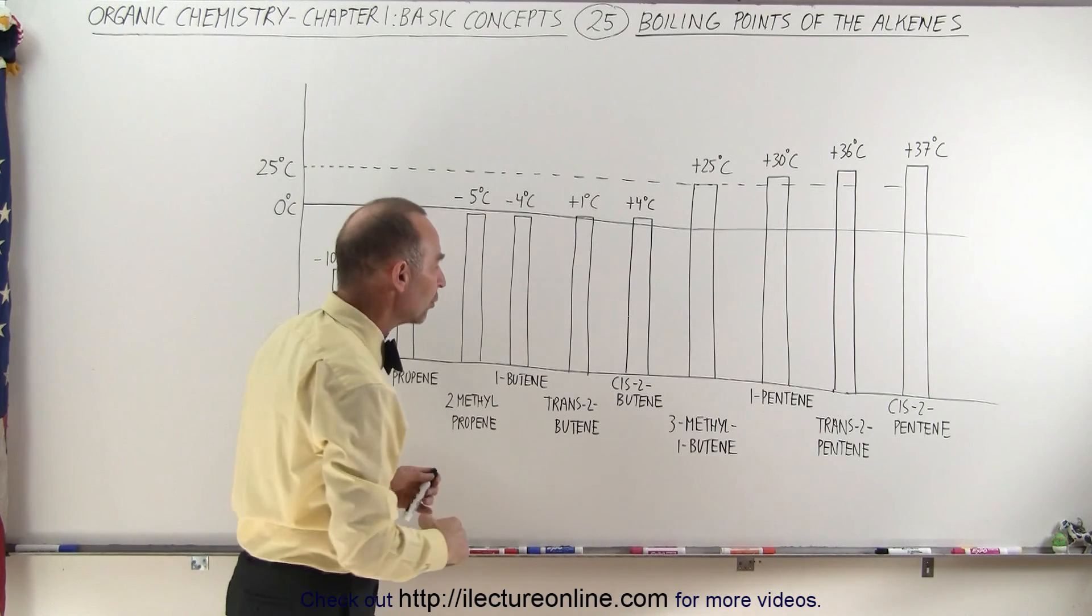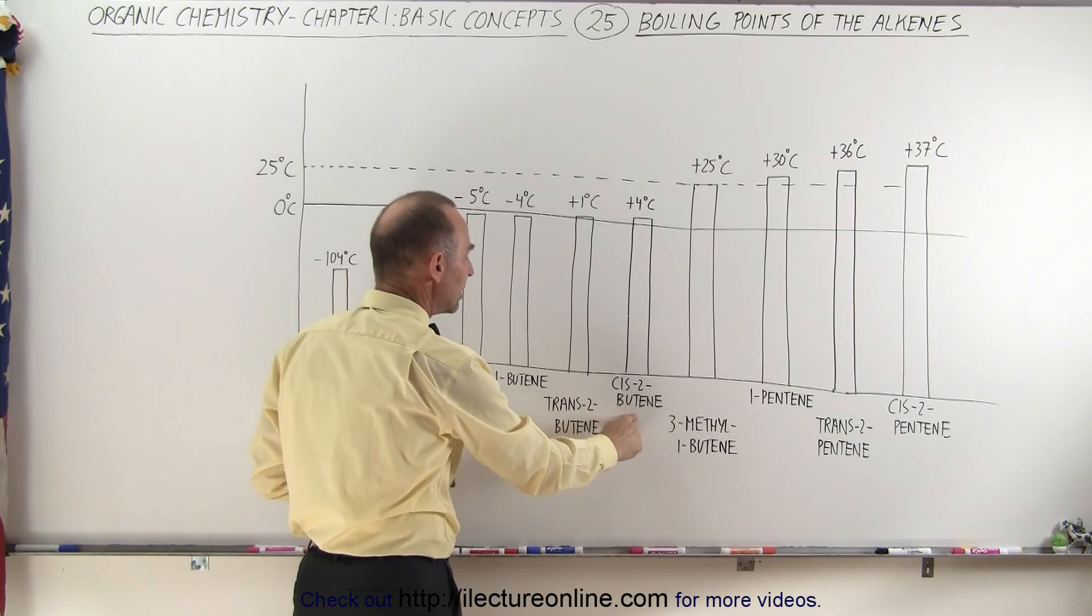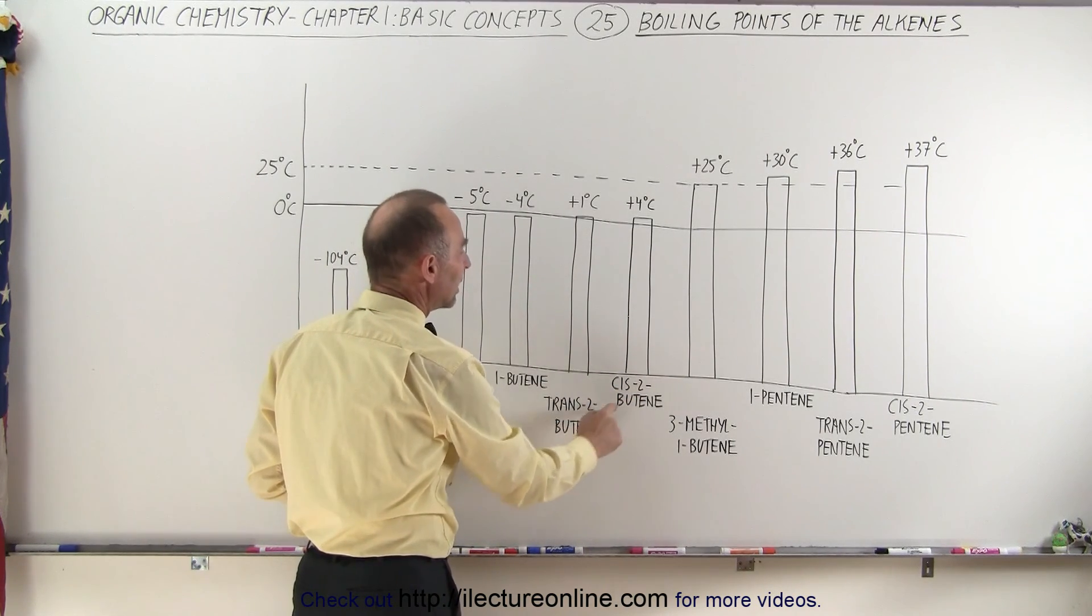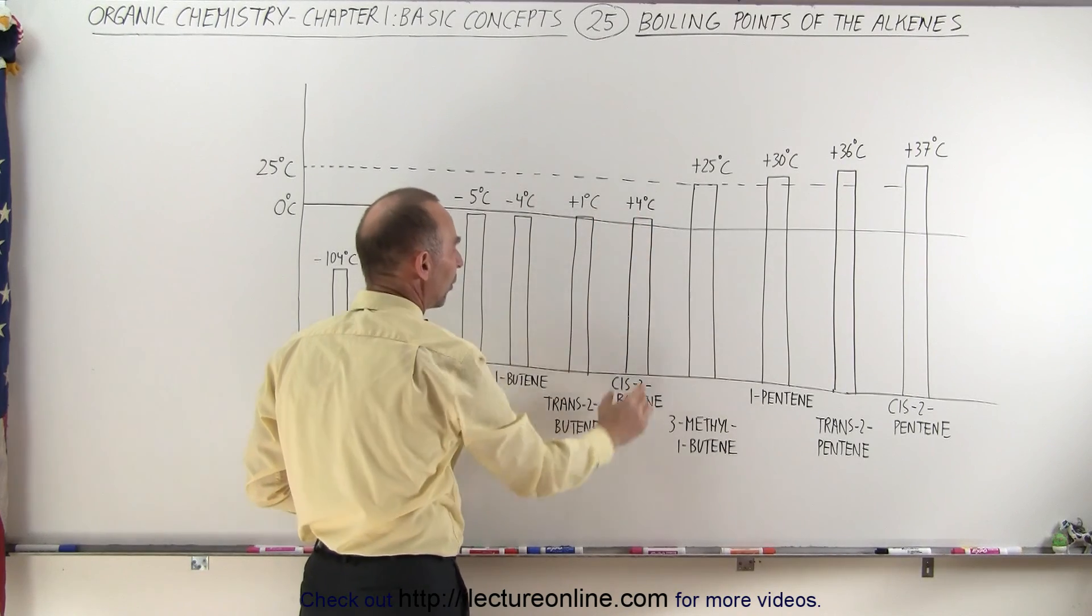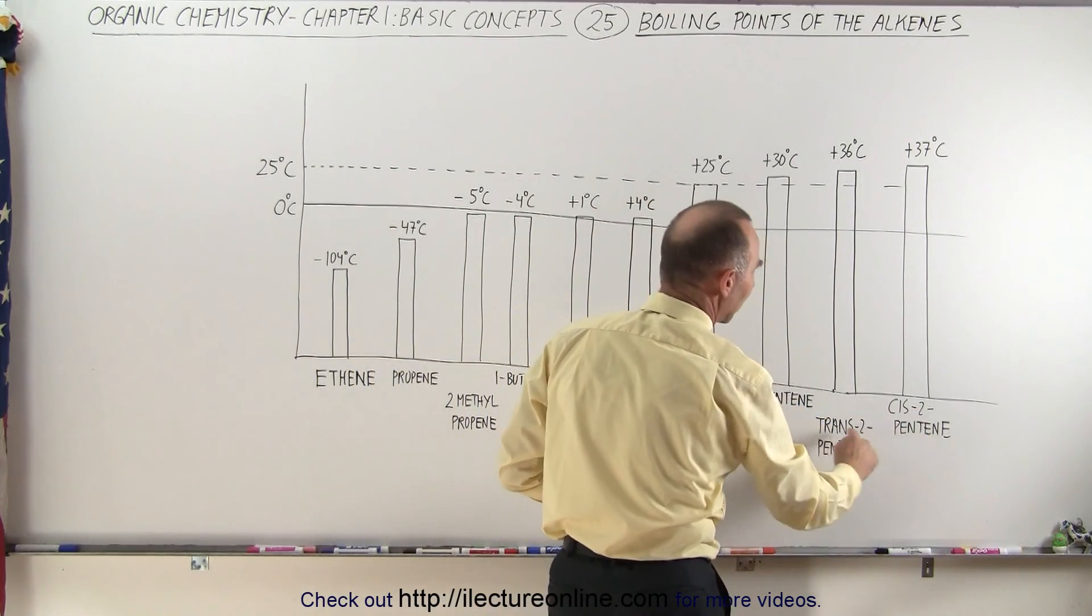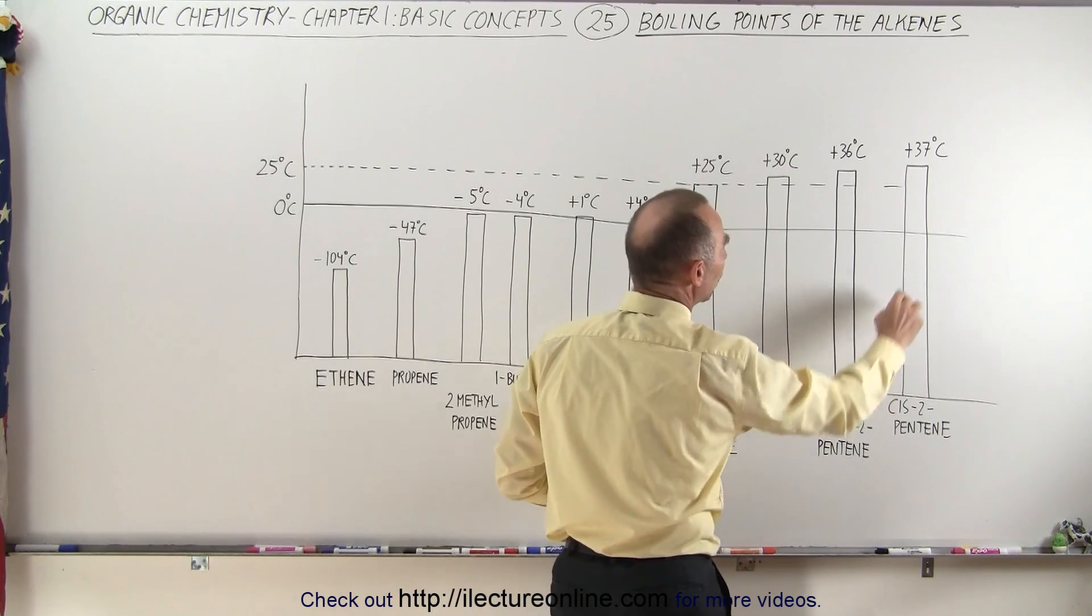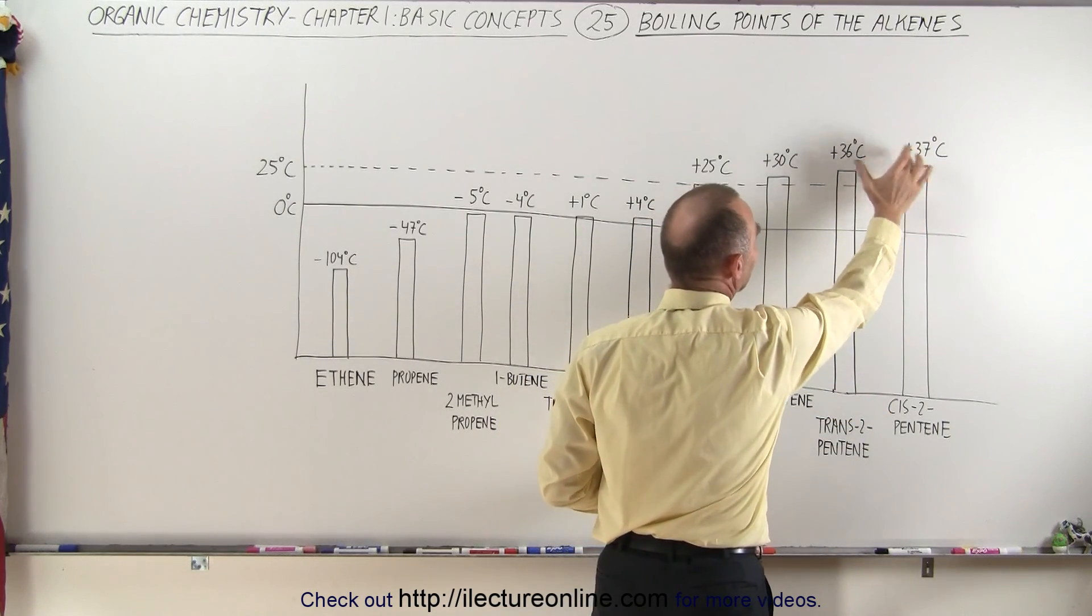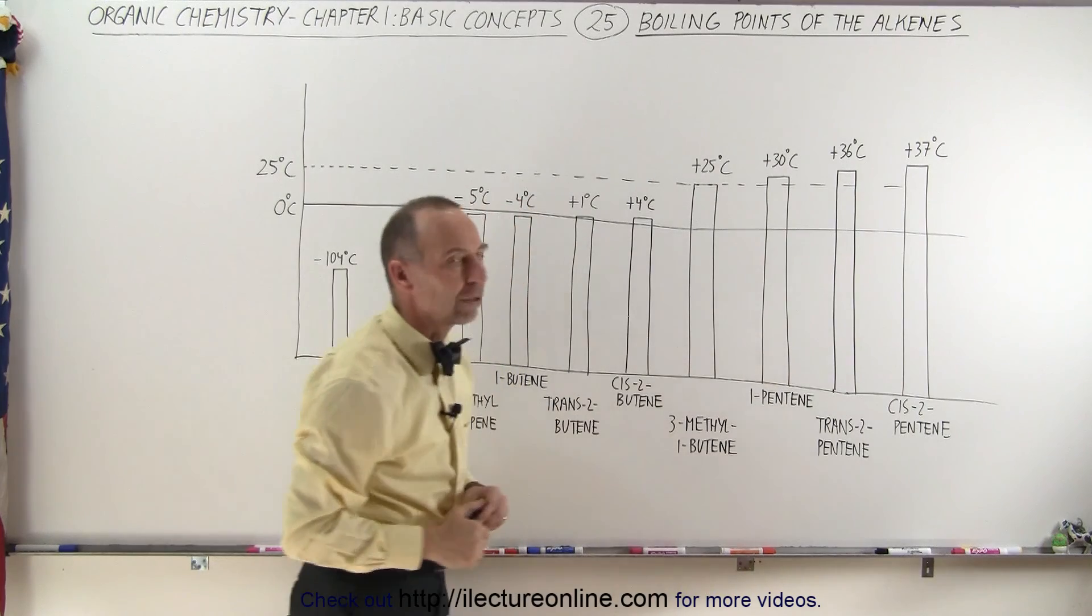But it's also interesting to note that cis-2-butene versus trans-2-butene has a slightly higher boiling point, and again if we come over here and look at cis-2-pentene and trans-2-pentene, notice that the cis version has a slightly higher boiling point than the trans version.